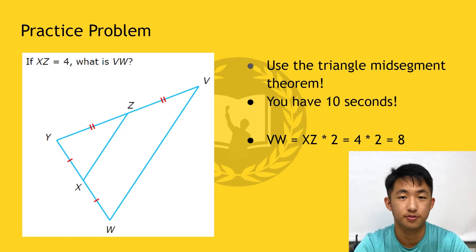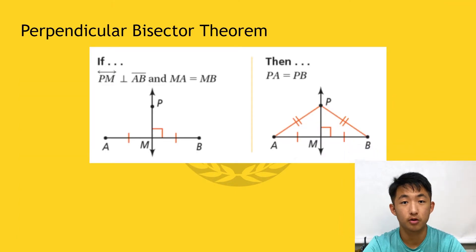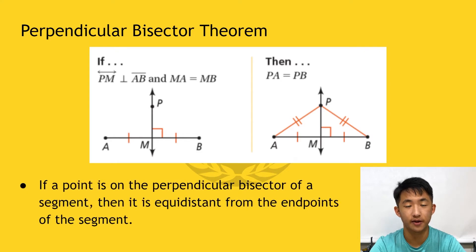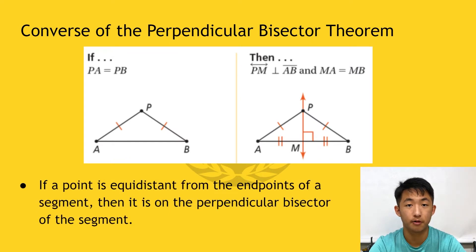This should be easy enough for most of you. Now let's take a look at bisectors in triangles. The perpendicular bisector theorem states that if a point is on the perpendicular bisector of a segment, it must also be equidistant from the endpoints of that segment. In this case, since point P is on the perpendicular bisector of AB, which is PM, PA must also be equal to PB. On the other hand, the converse of the perpendicular bisector theorem states that if a point is equidistant from the endpoints of a segment, it must also be on the perpendicular bisector of that segment.